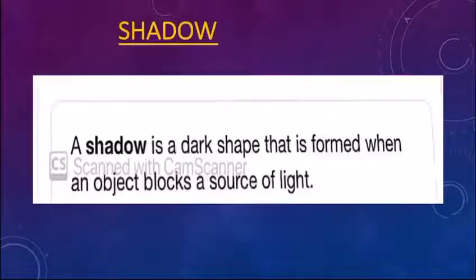What is a shadow? As you all know, shadow is the dark shape that is formed when an object blocks a source of light. So it is always formed when there is light.